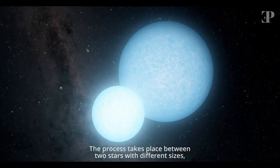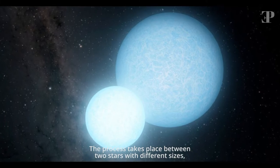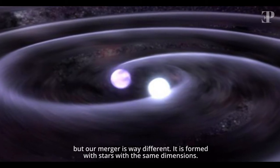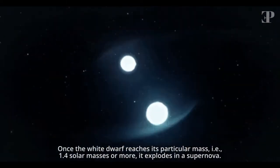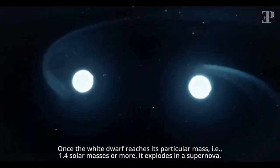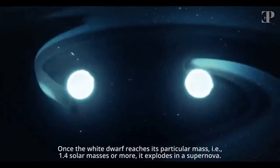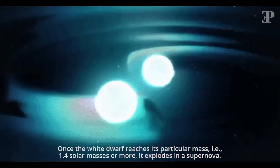The process takes place between two stars with different sizes, but our merger is way different. It is formed with stars with the same dimensions. Once the white dwarf reaches its particular mass, 1.4 solar masses or more, it explodes in a supernova.